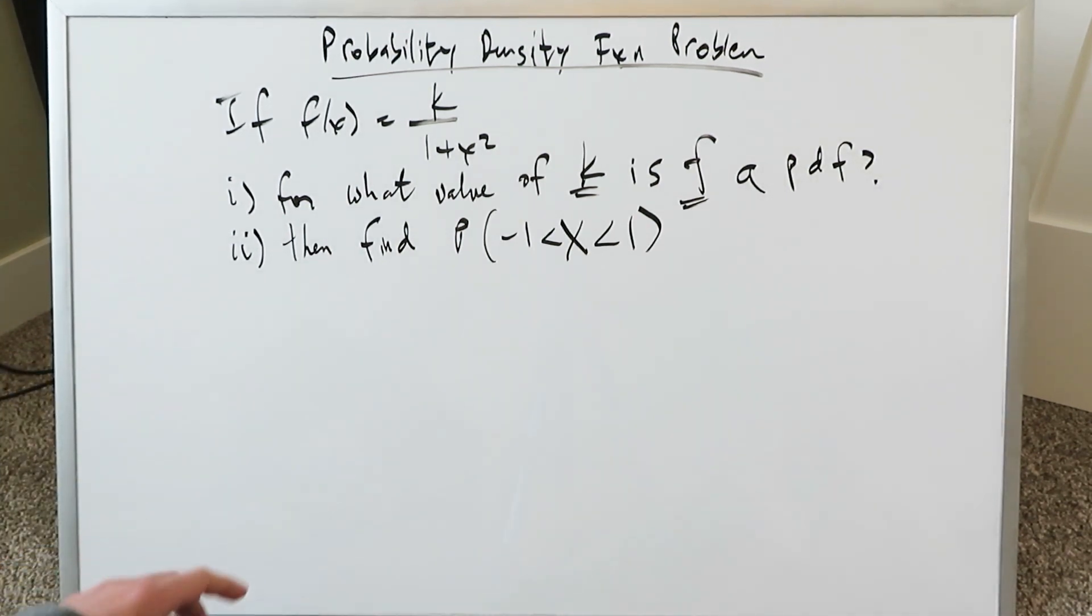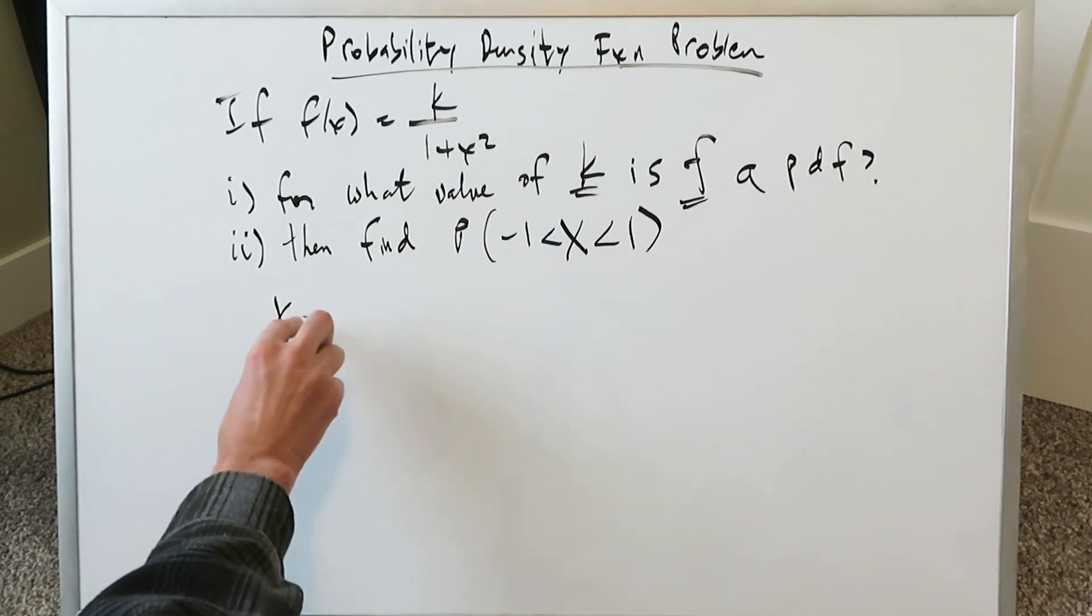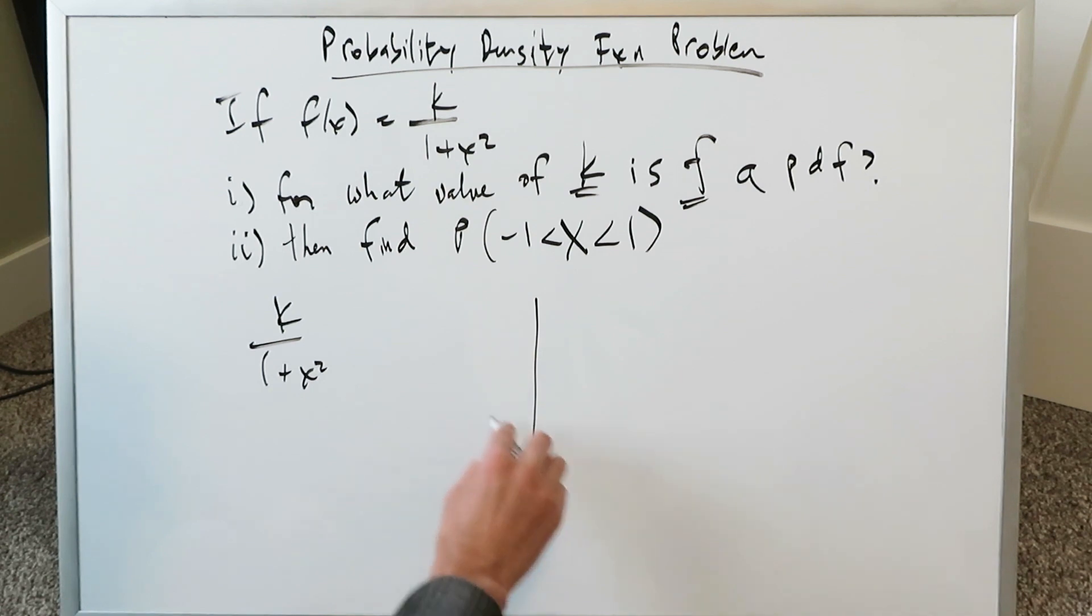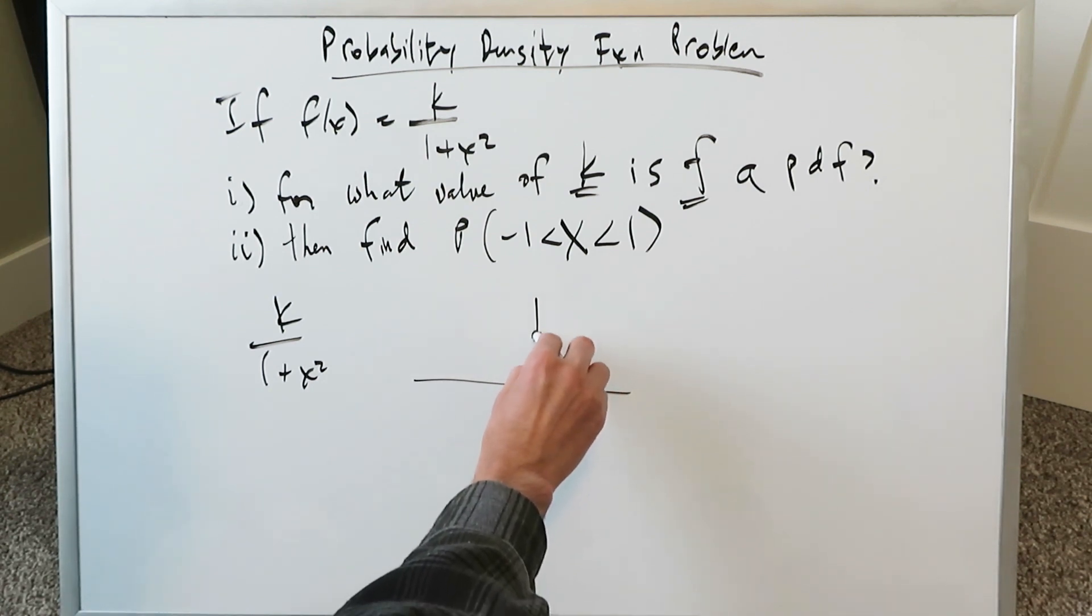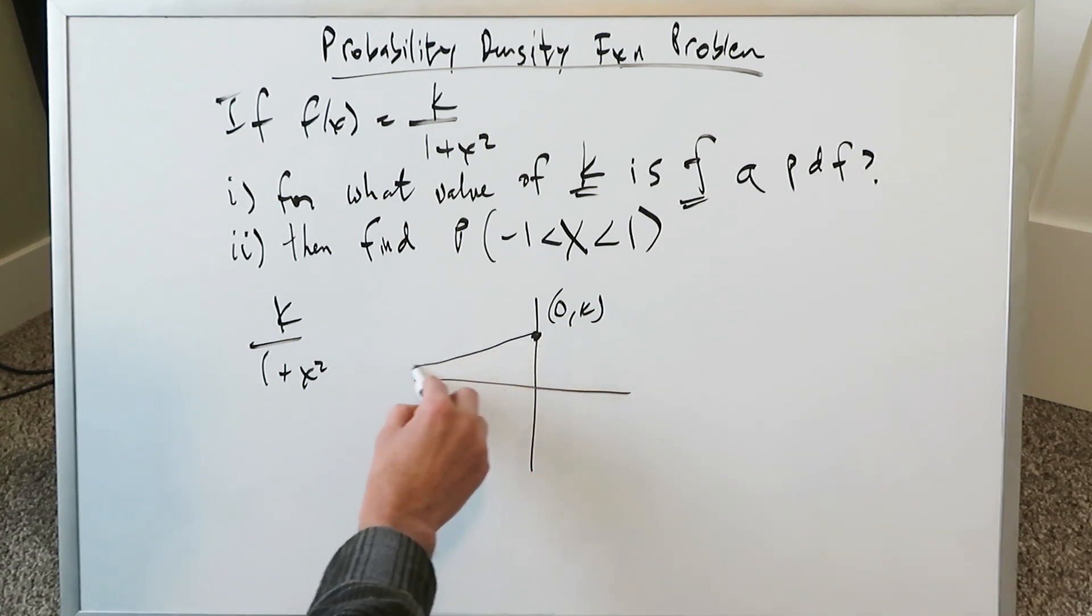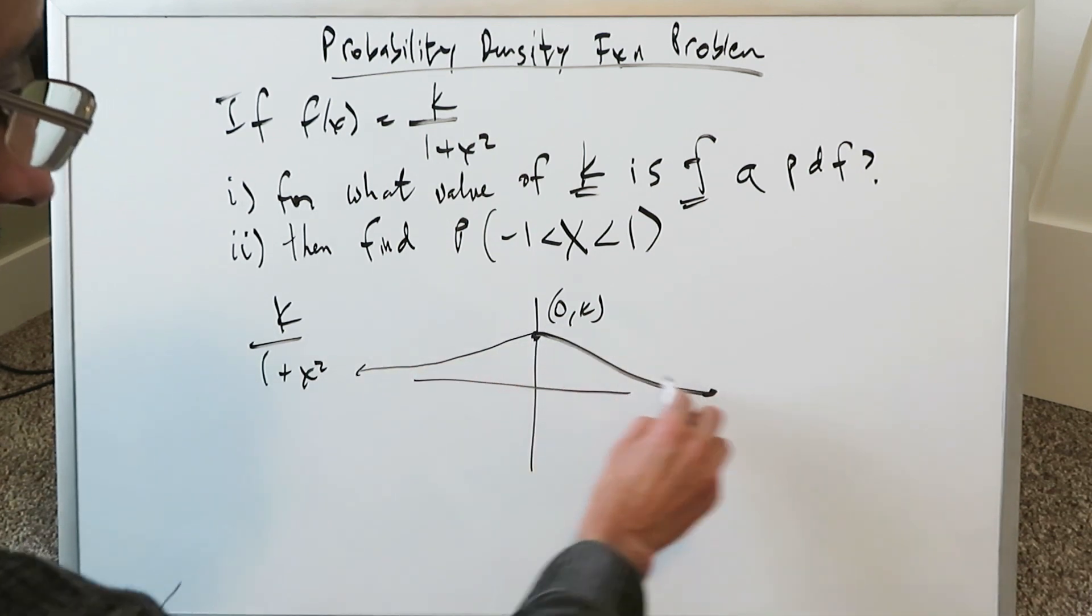Let's look at that function k divided by 1 plus x squared. Based on what that k value could be, like a 2, 3, 4, whatever the number might be, your graph always looks something like this. We're assuming this right here is 0, k, because we don't know what the value of k is.